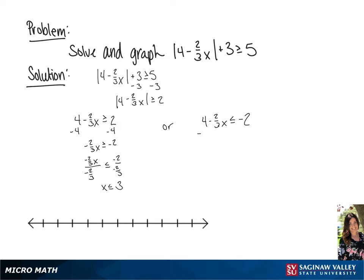Moving on to the second inequality, we're going to subtract 4 from each side, giving us negative 2 thirds x is less than or equal to negative 6. Next, we're going to divide each side by negative 2 thirds. Once again, since we're dividing by a negative number, we're going to flip the sign, and we're going to have our second solution of x is greater than or equal to 9.